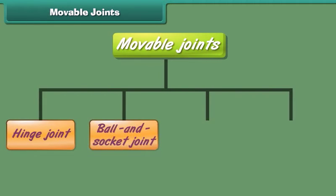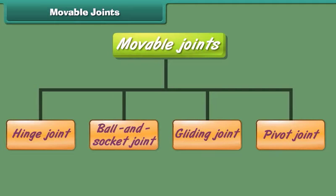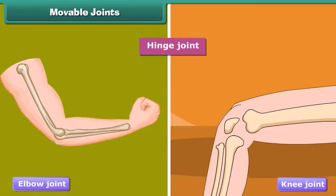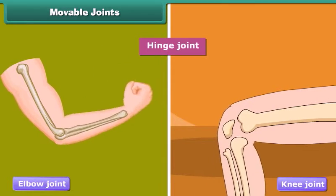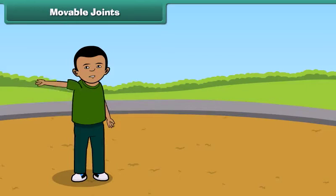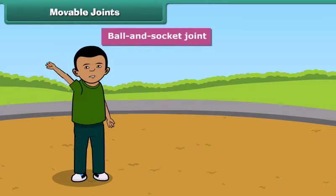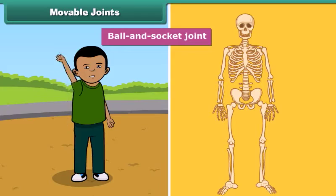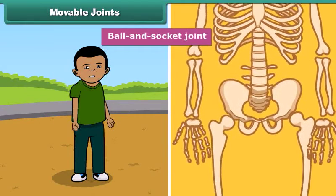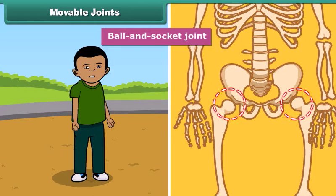Moveable joints are grouped into four types on the basis of movement. Hinge joints are the joints which can be bent in only one direction. For example, elbow joint and knee joint. The joints which join the bones to make circular movement possible are called ball and socket joints. For example, the bone in the upper arm is fitted to the bone in the shoulder by a ball and socket joint. Similarly, the thigh bone is fitted to the hip bone by a ball and socket joint.